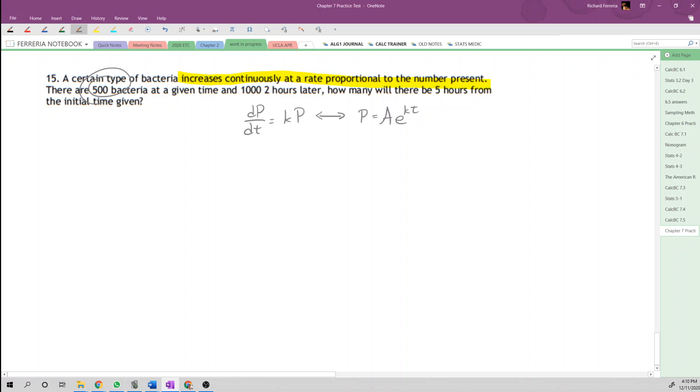If there are 500 present at a certain time, we'll say that a equals 500 when t equals 0. We're setting our time frame to 0 when there are 500 bacteria in the petri dish.